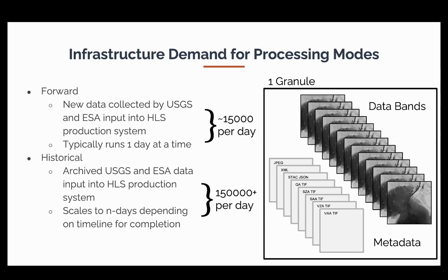In terms of processing demand, we have two modes. Forward mode processes new satellite data as it arrives from USGS or ESA at Level 1, which we process to Level 3. This generates about 15,000 files per day — roughly 8,000 scenes for HLS S30 and 7,000 for HLS L30. It is highly seasonal: right now in summer we'd get many more scenes than in December in the northern hemisphere. Typically this runs once per day, unless input data like LADS is delayed, in which case we may process two or three days at a time.